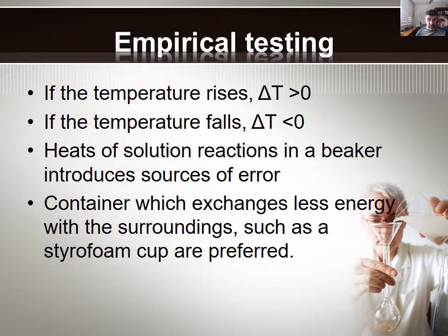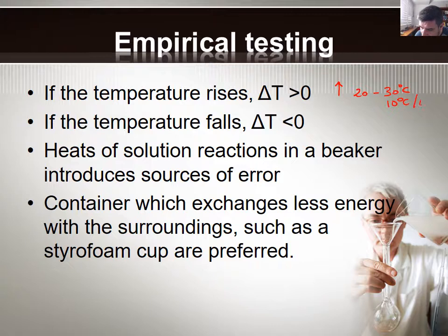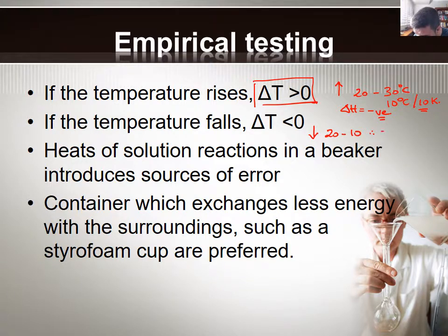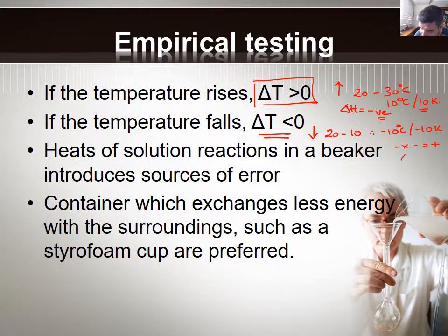So once we start to do some testing — and you will carry out some experiments on this in class — if the temperature is rising, say we go from 20 degrees to 30 degrees Celsius, then this is a 10 degree Celsius or 10 Kelvin change. That means the delta T value is going to be greater than zero and therefore the delta H value is going to be negative. If the temperature falls — so a falling temperature means maybe we start with 20 degrees and go to 10 degrees — the change is going to be minus 10 Kelvin, so our delta T value will be less than zero, and because a negative multiplied by a negative is a positive, our delta H value will be positive and therefore this will be an endothermic process.